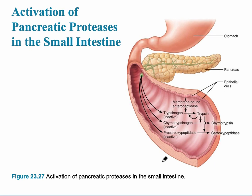The pancreatic proteases are specifically activated in the small intestine. Trypsinogen, chymotrypsinogen, and procarboxypeptidase are all inactive forms that are activated by the chemical trypsin to become chymotrypsin and carboxypeptidase.